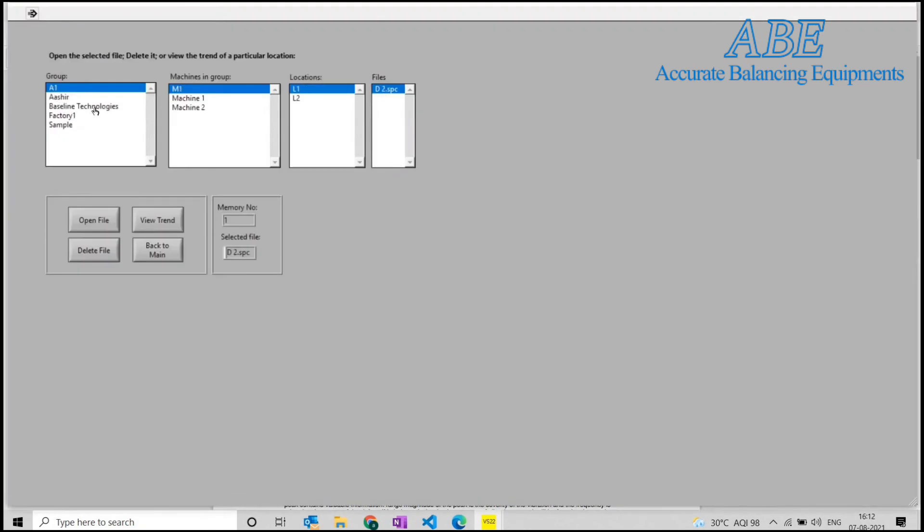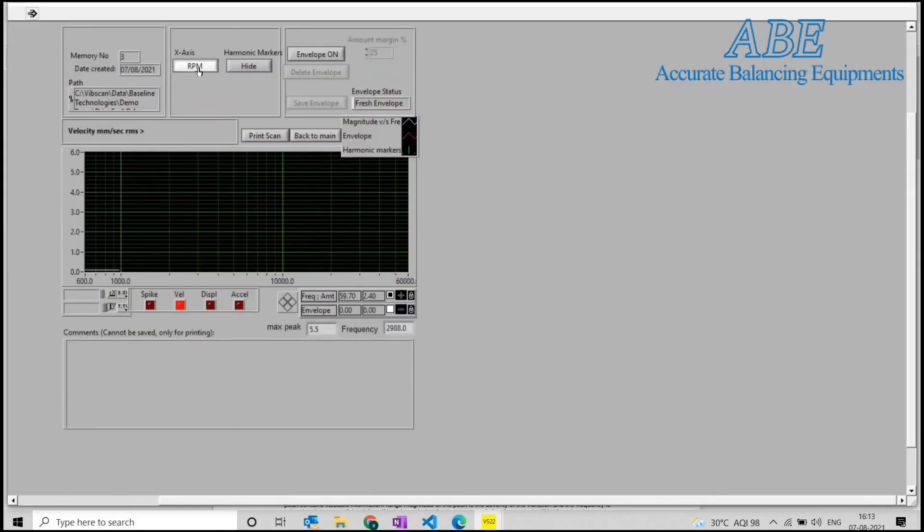A brief demo of the software is given here. After transferring the spectrum files, the user can analyze the data. The files can be trended using features such as the waterfall and other statistical plots available. The instrument has a detailed manual in the help section of the software in addition to the copy provided.